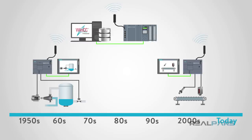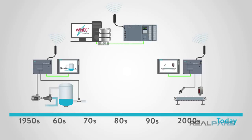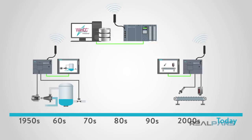Essentially, SCADA is a collection of hardware and software components. This collection of components begins with real-time data collected from plant floor devices such as pumps, valves, and transmitters. These components don't have to be from a particular vendor; they just need to have a communication protocol that the processor can utilize. Data collected from the field devices is then passed to the processors, such as PLCs.